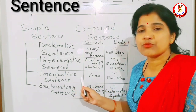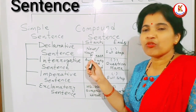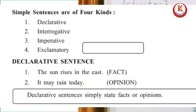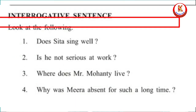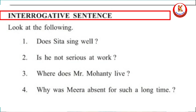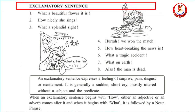If a sentence starts with a verb, it is an imperative sentence; if it starts with a noun or noun phrase, it is declarative. Declarative sentences state facts and opinions. Interrogative sentences are questions. Imperative sentences express an order, request, advice, command, prayer, suggestion, warning, or good wishes. Exclamatory sentences, as the name suggests, express a feeling of surprise, pain, disgust, or excitement.